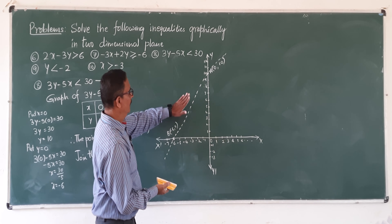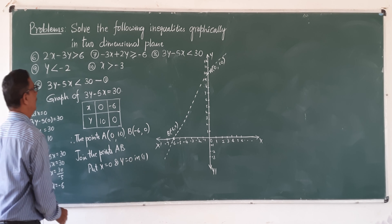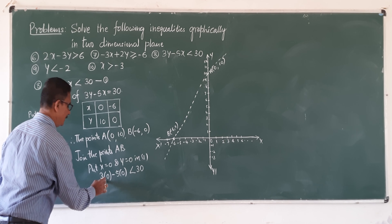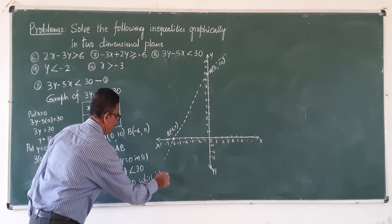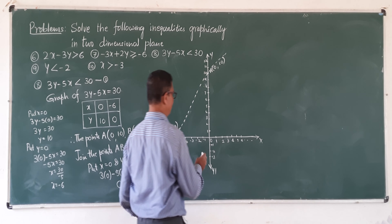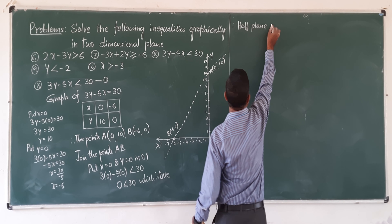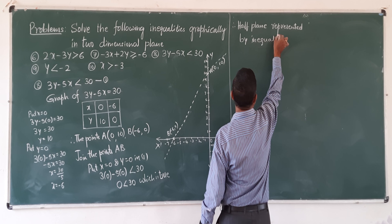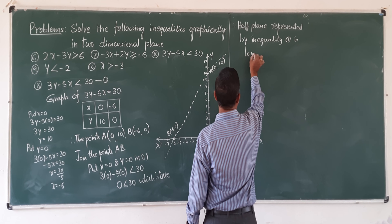Now we got two planes, upper and lower. Go for the next step: put x equal to 0 and y equal to 0 in the given inequality. 3 into 0 minus 5 into 0 less than 30 — that is 0 less than 30. Is 0 less than 30? Yes, which is true. Therefore, the half plane represented by the inequality — since it satisfies, the shaded portion is towards the origin.